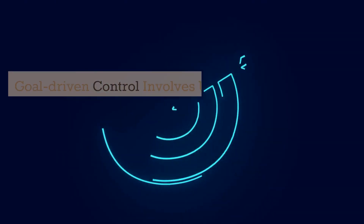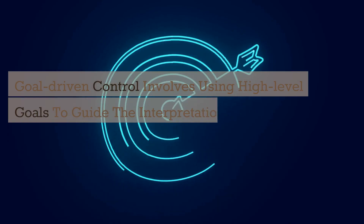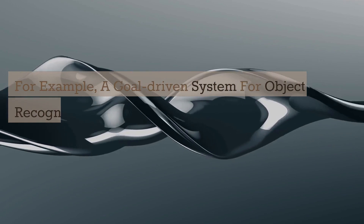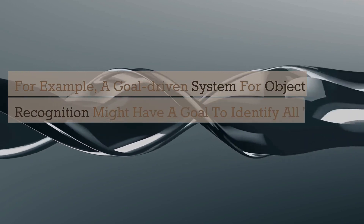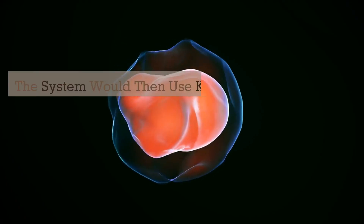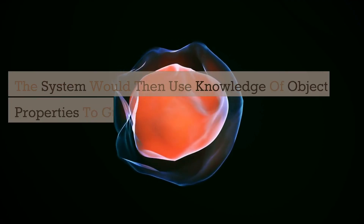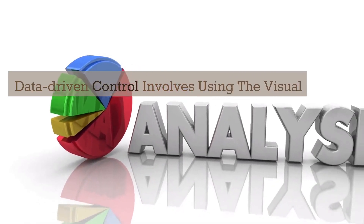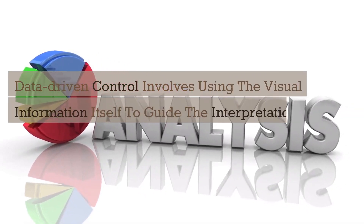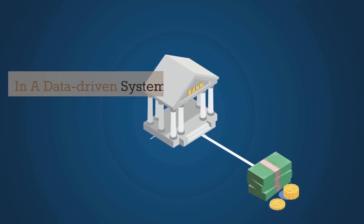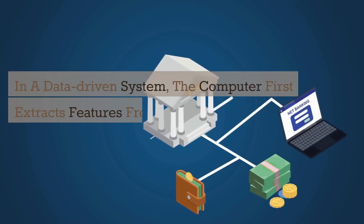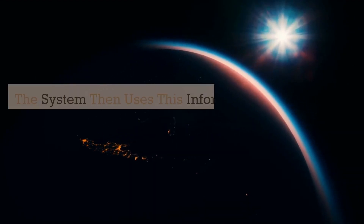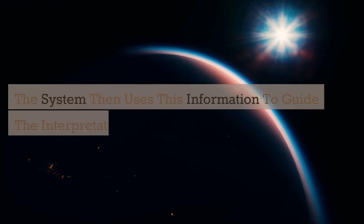Goal-driven control involves using high-level goals to guide the interpretation of visual information. For example, a goal-driven system for object recognition might have a goal to identify all the objects in an image, then use knowledge of object properties to guide image interpretation. Data-driven control involves using the visual information itself to guide the interpretation process. The computer first extracts features from the image, such as color, texture, and shape, and then uses this information to guide interpretation.